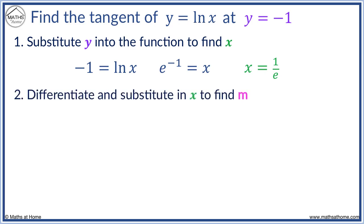Now we differentiate ln x to get 1 over x. We now sub x into this to get m. Putting 1 over e into 1 over x, we get m equals 1 over 1 over e. This simplifies to just m equals e.